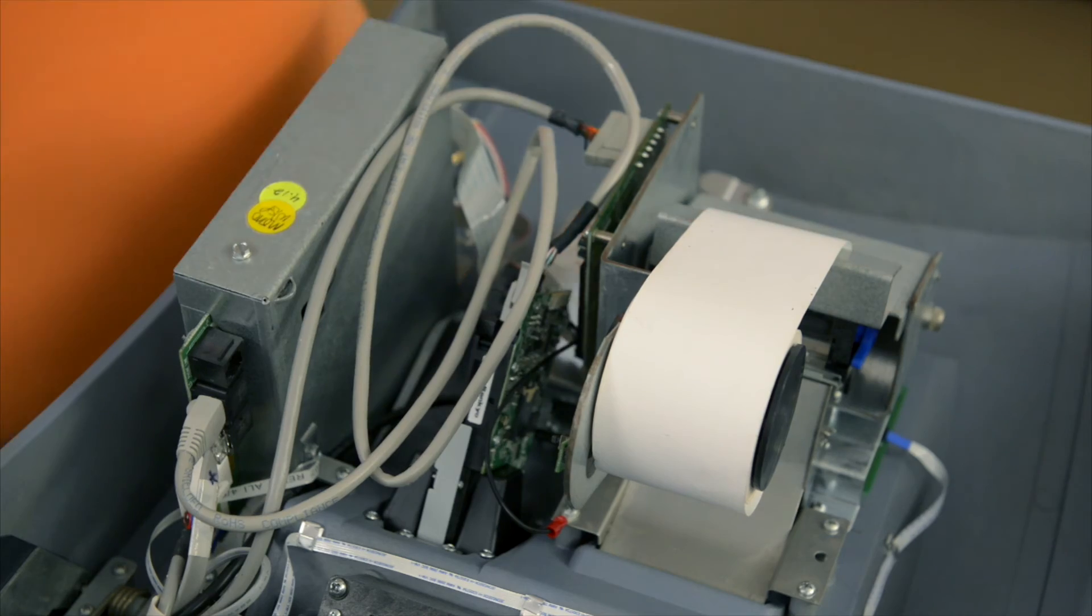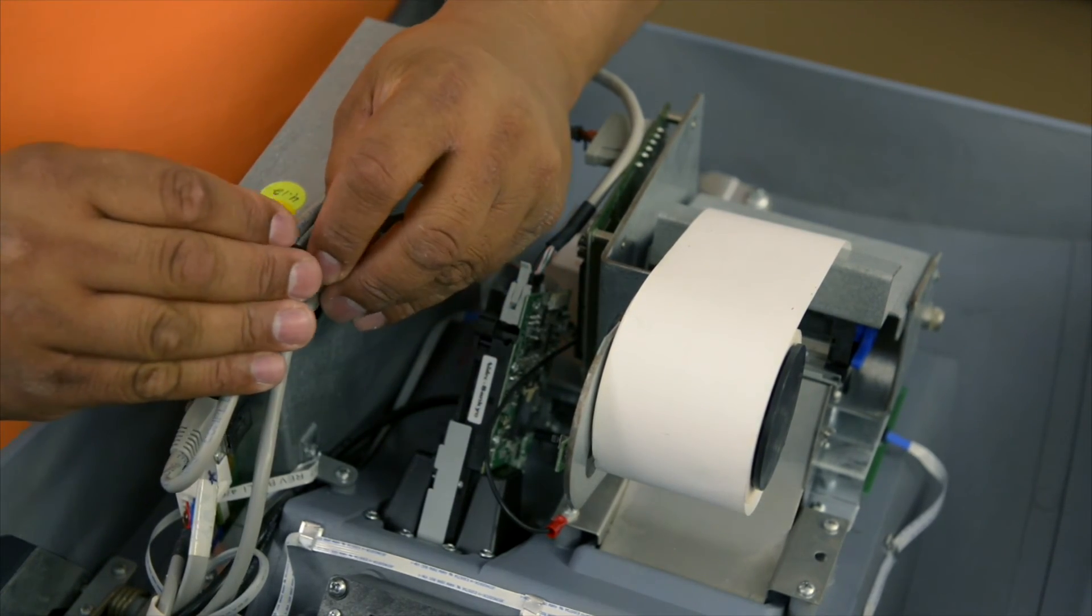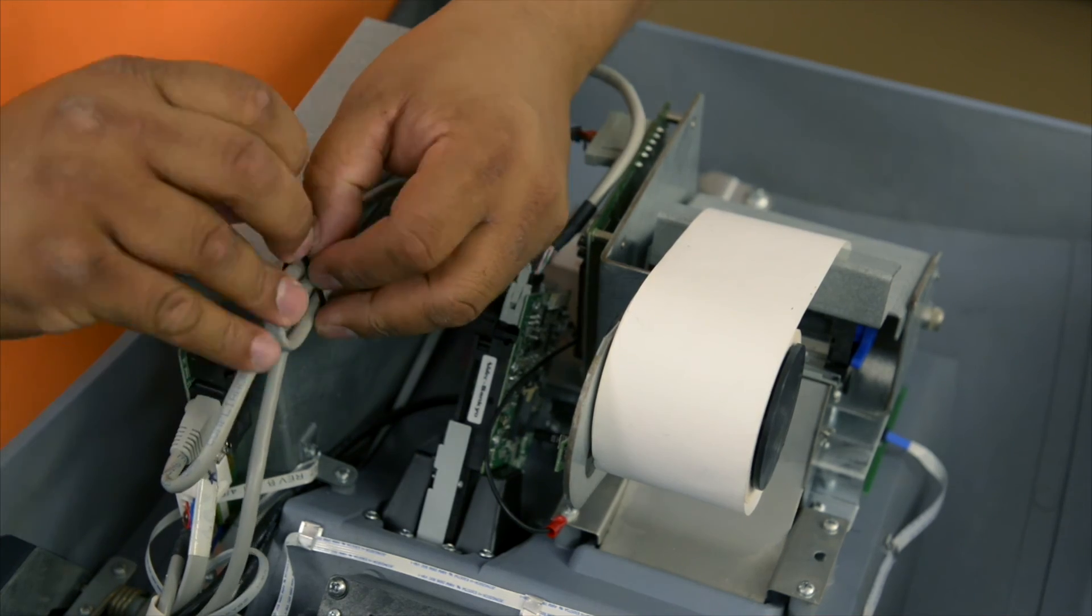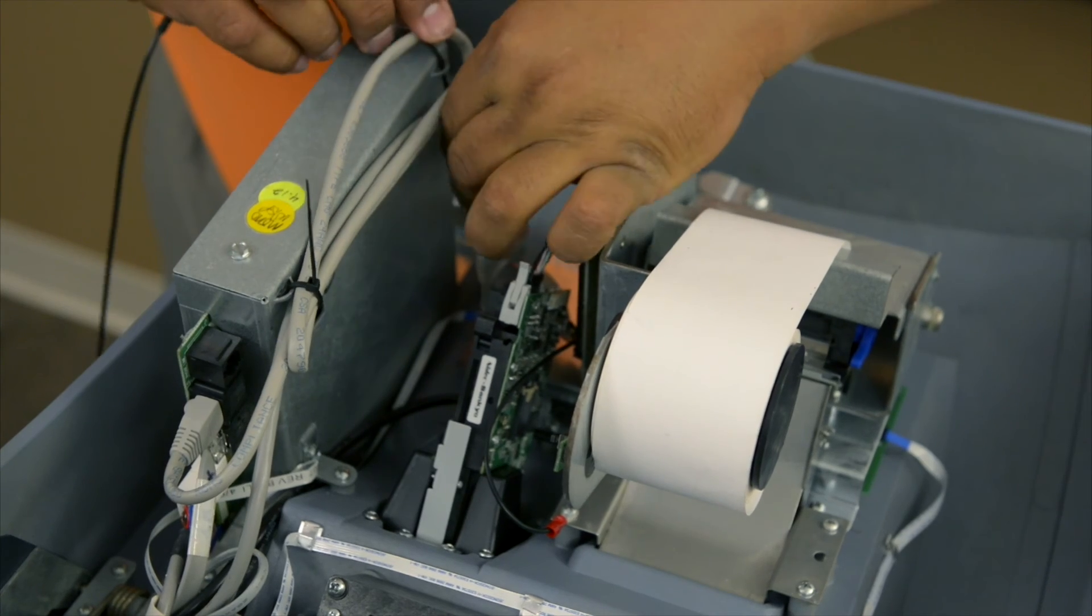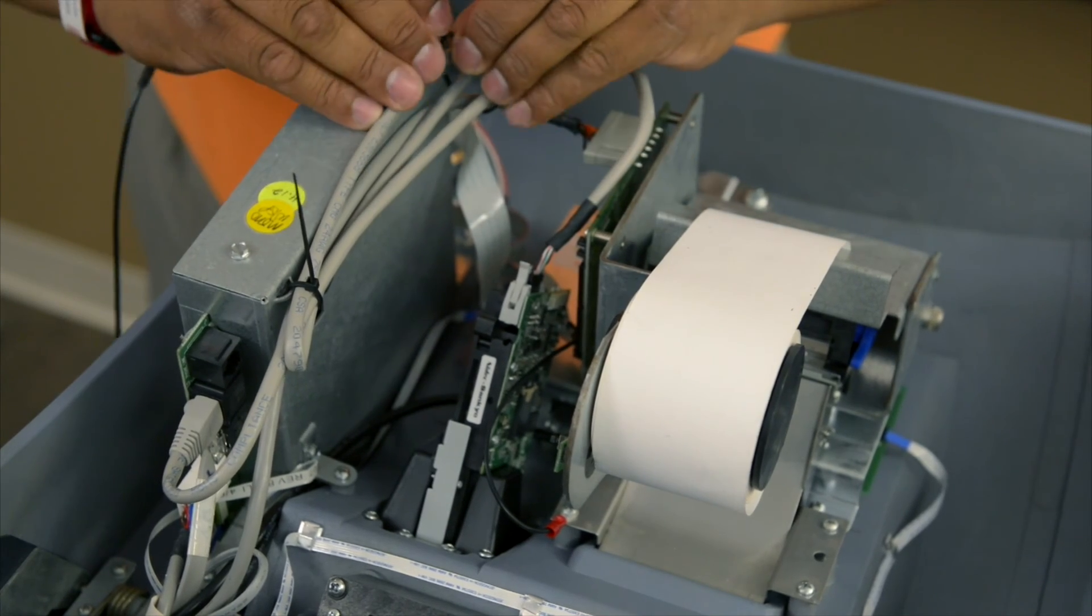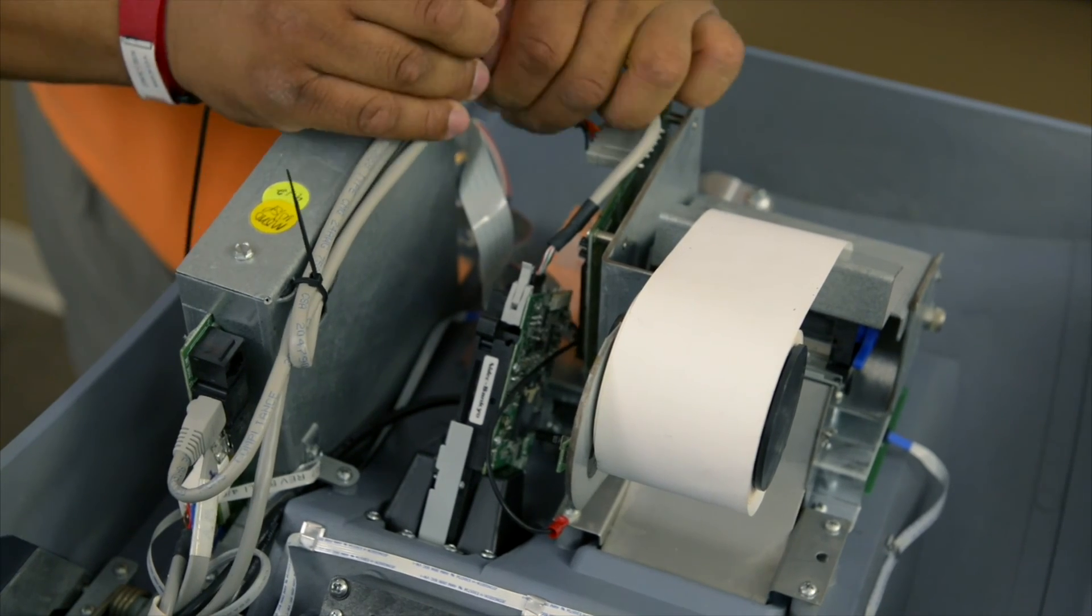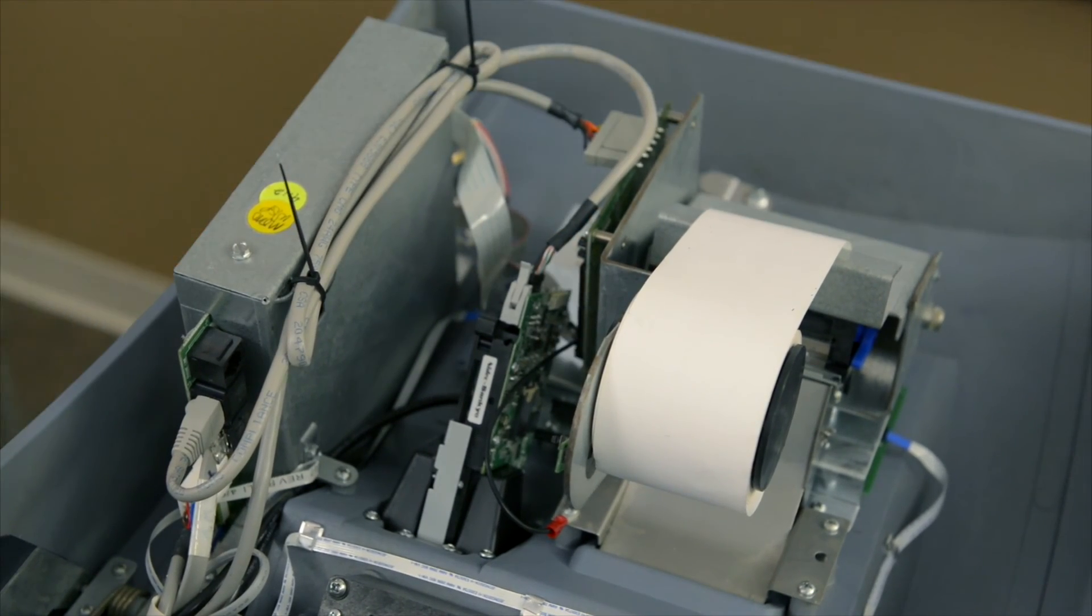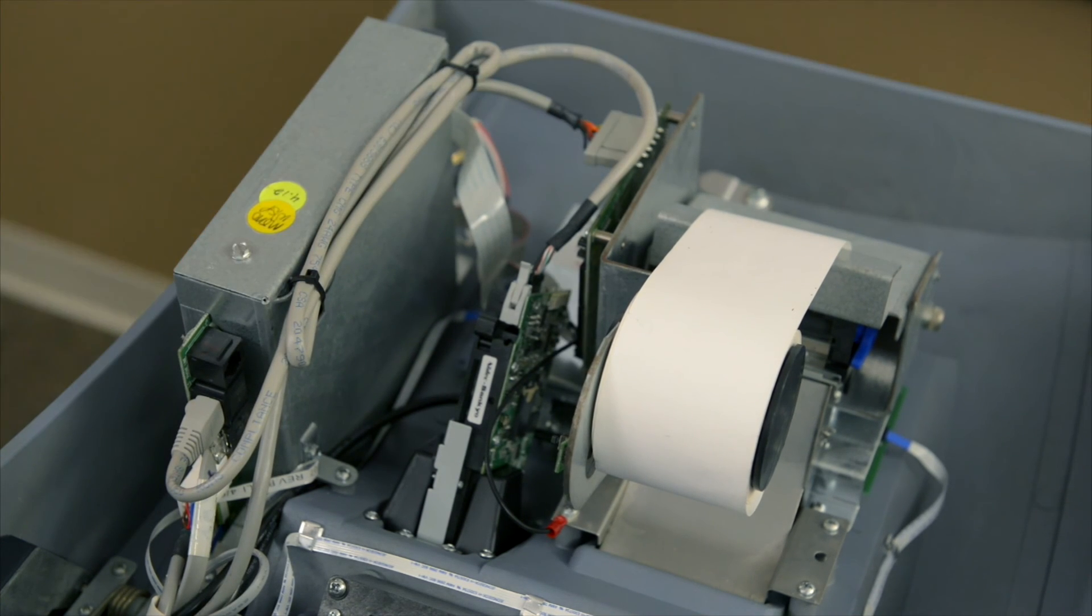Secure the printer harness and the extra cable from your EMV card reader alongside the main board with two tie wraps. Clip your tie wraps and you've completed the installation of your hardware.